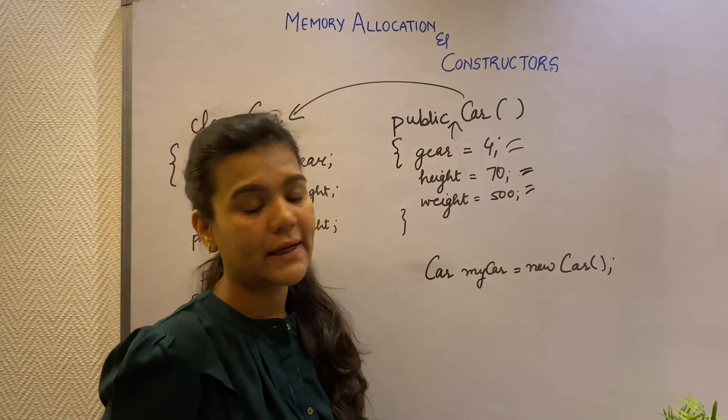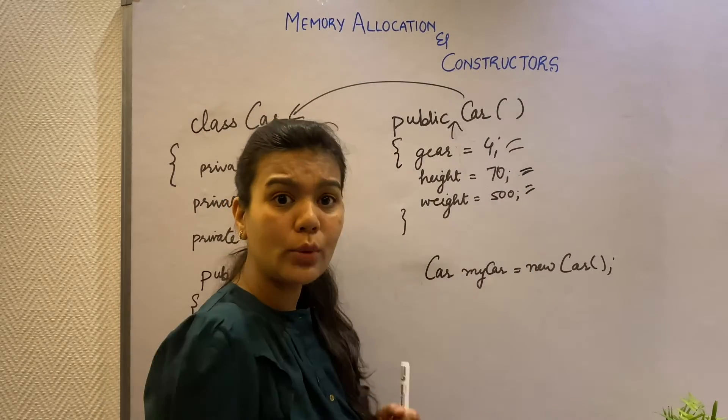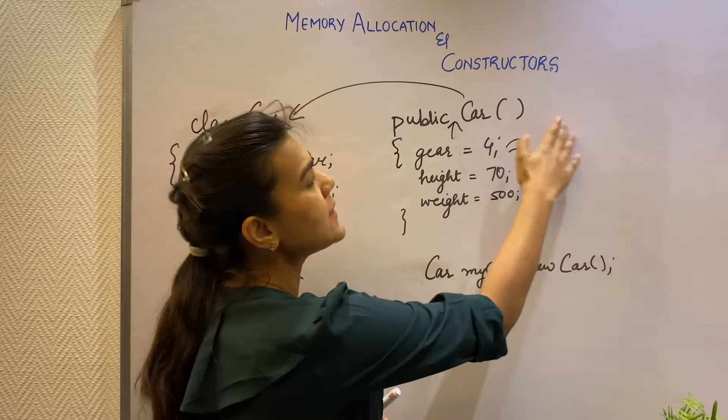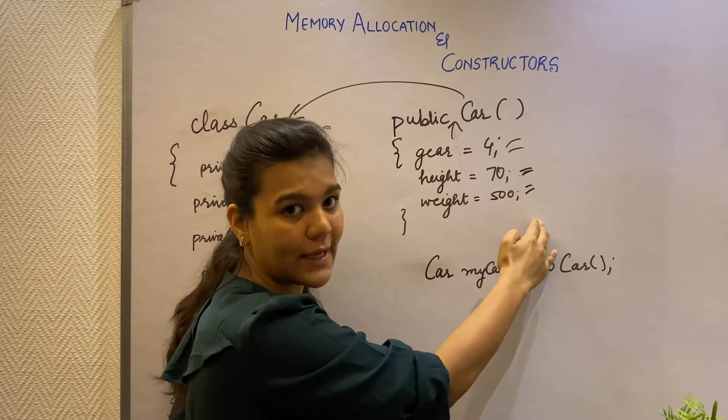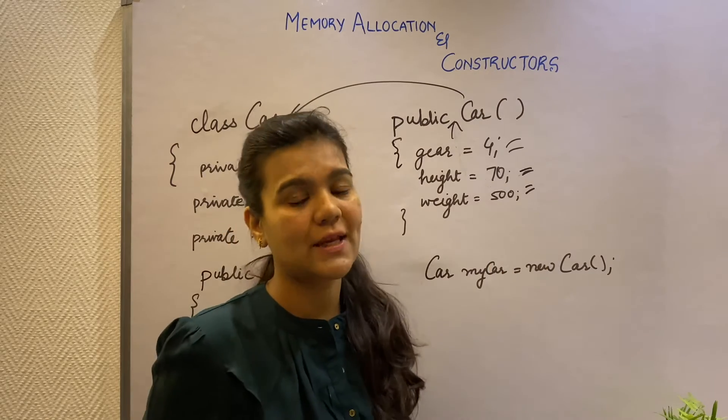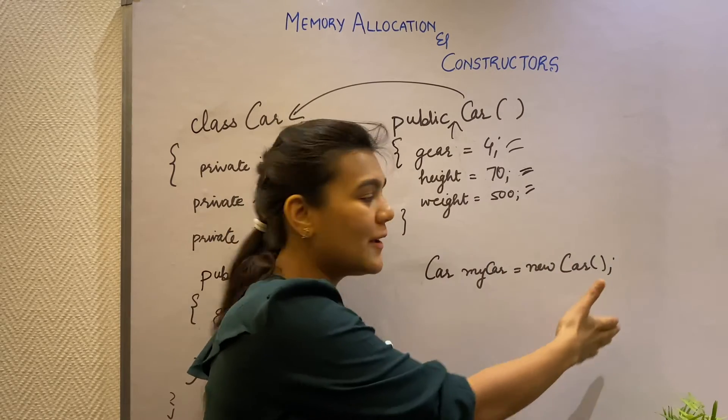So when I create my MyCar object, during the object creation itself, the constructor gets called and all the properties get initialized. And I get a working object as soon as I create my MyCar object.